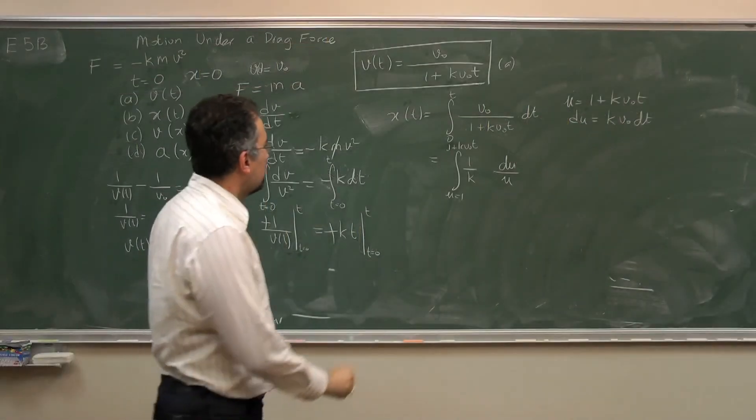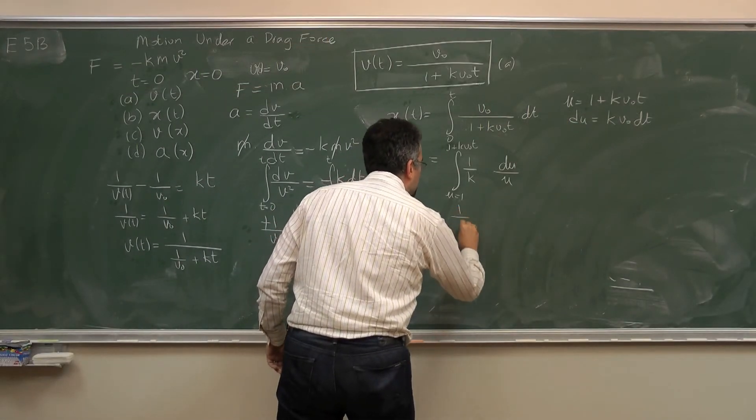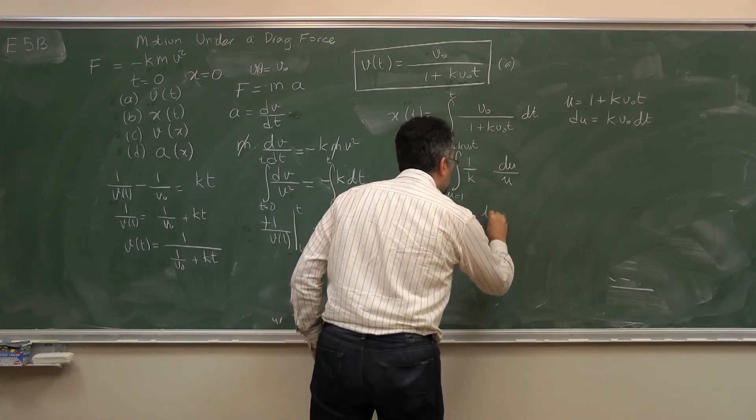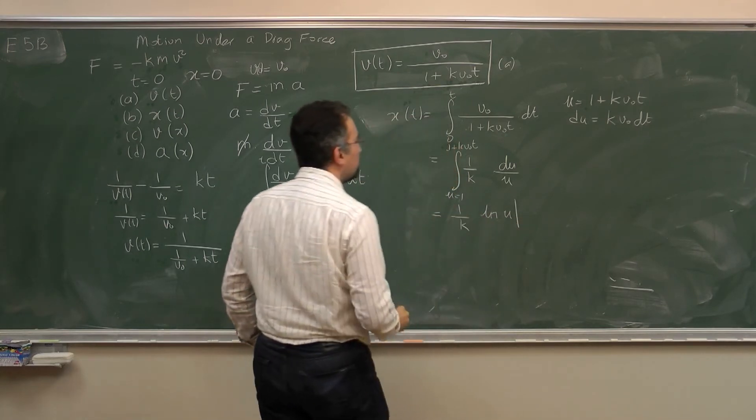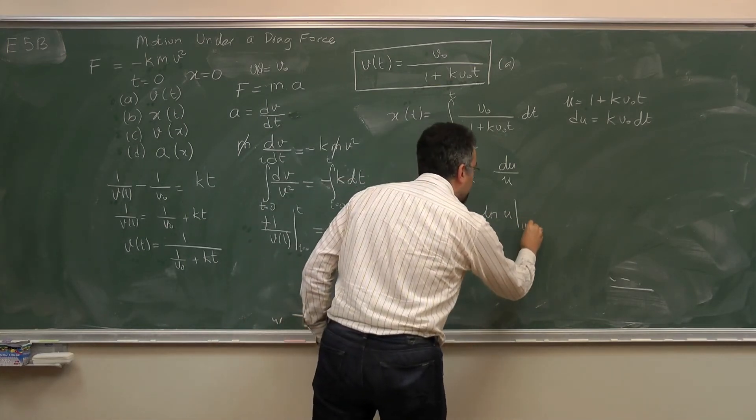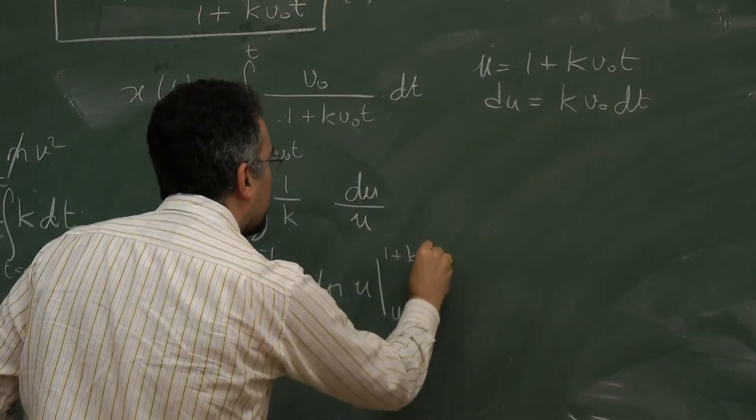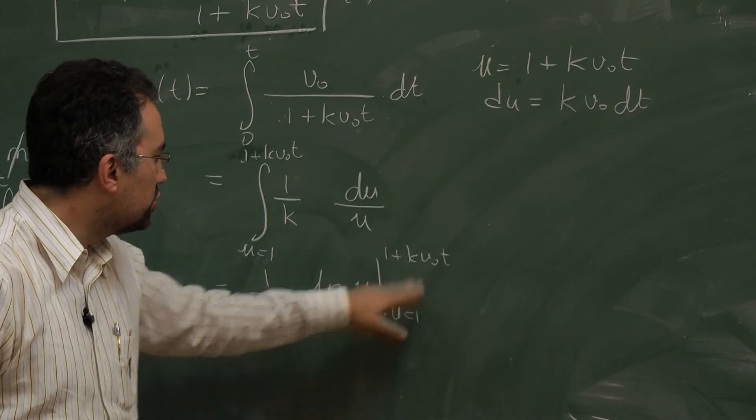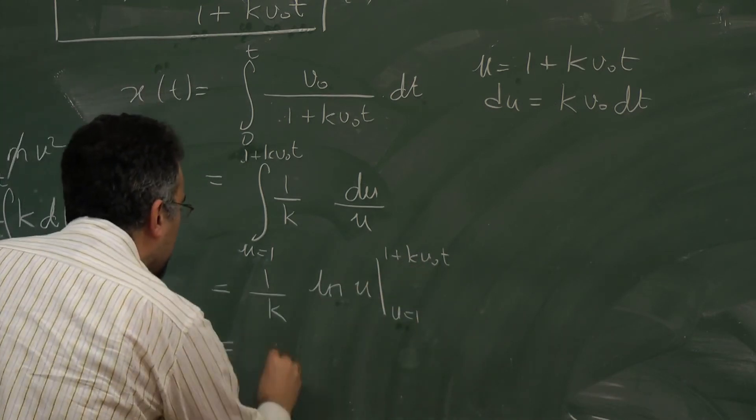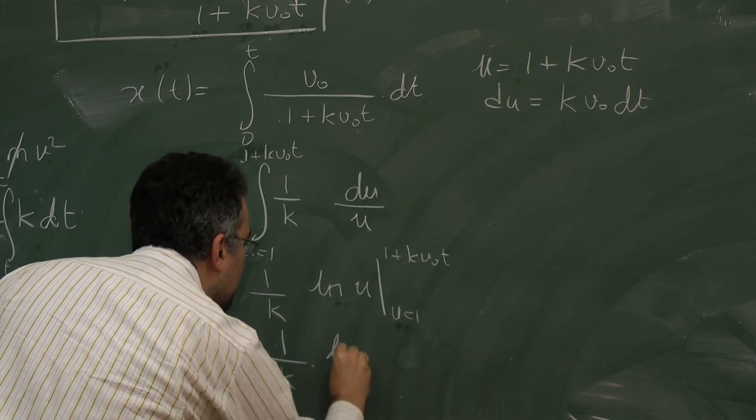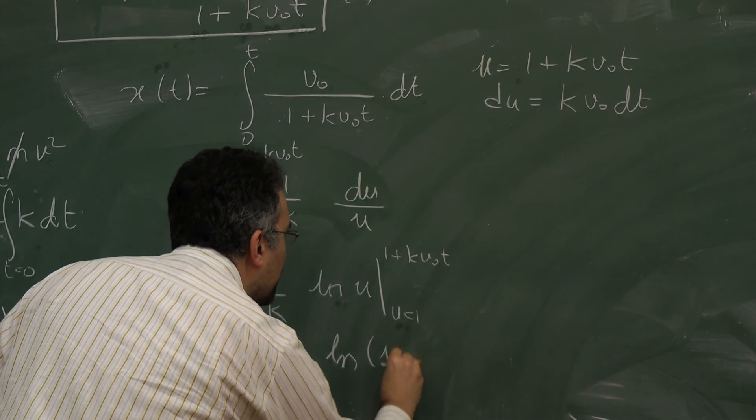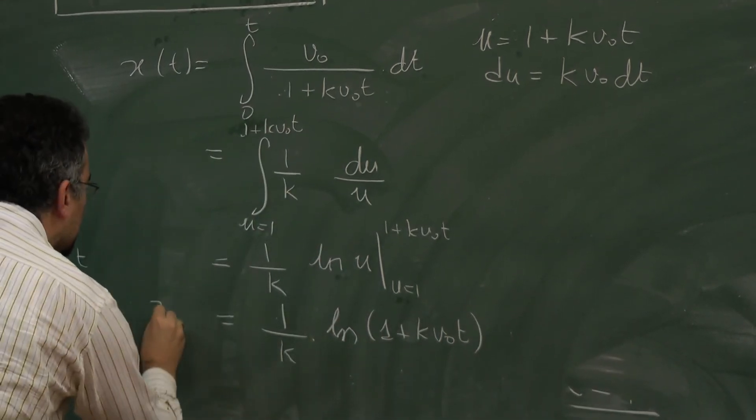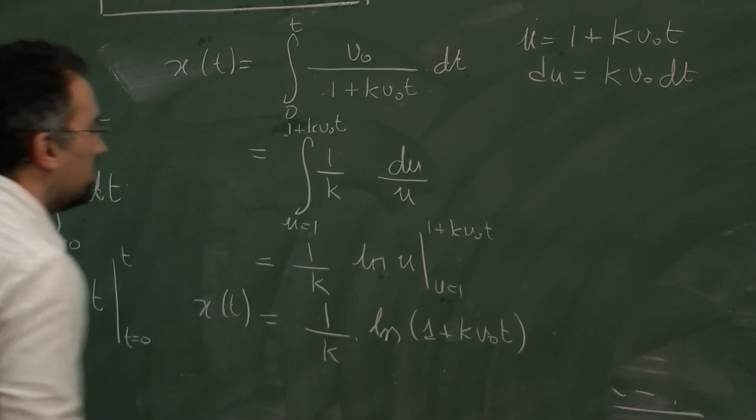Now 1 over k is a constant. So I get 1 over k. The integral of du over u is ln u. So this is going to be integrated, evaluated from u equals 1 to 1 plus k v0 t. ln 1 is just 0, so this evaluates to be 1 over k times ln of (1 plus k v0 t).